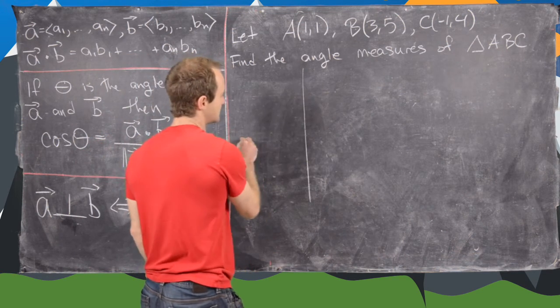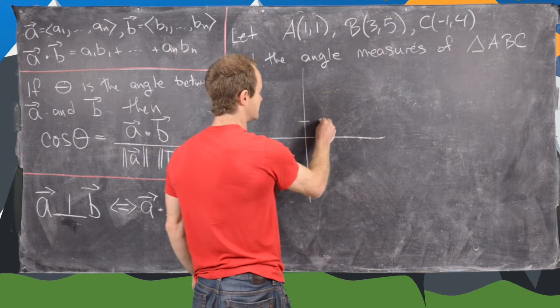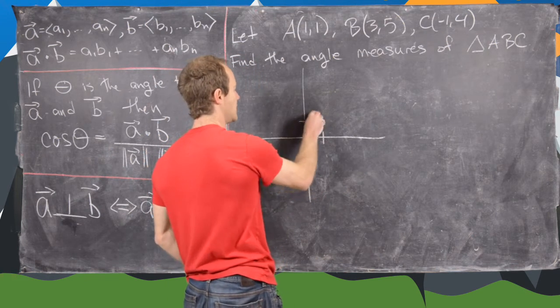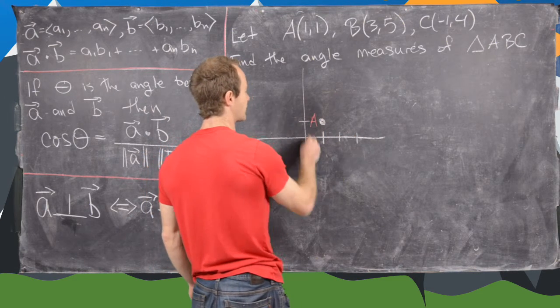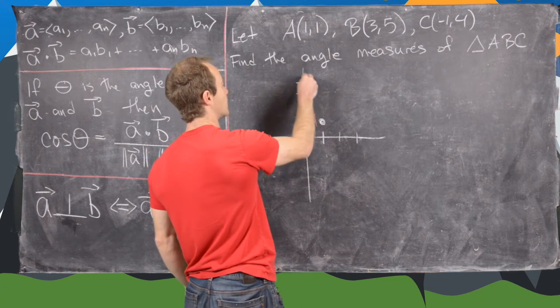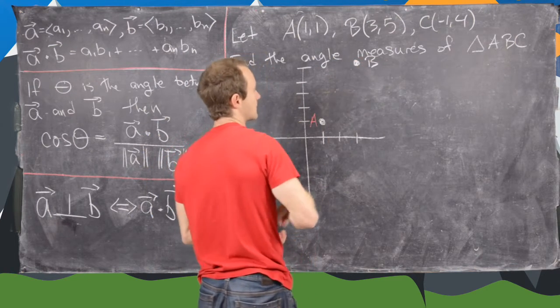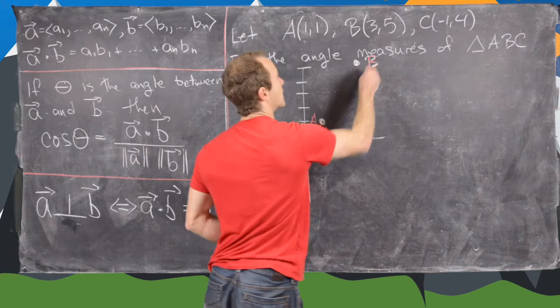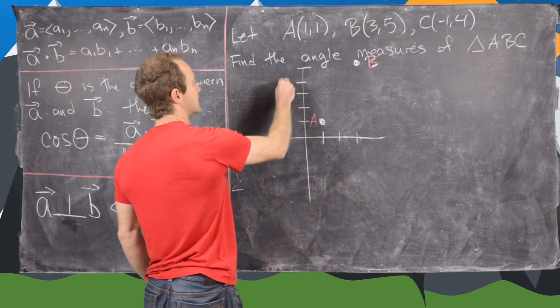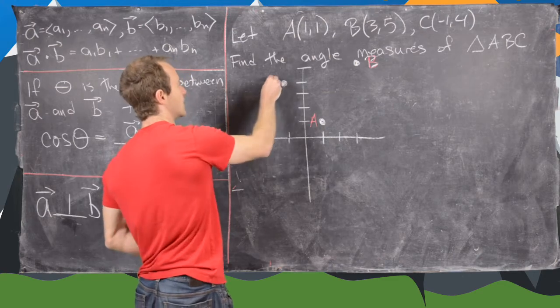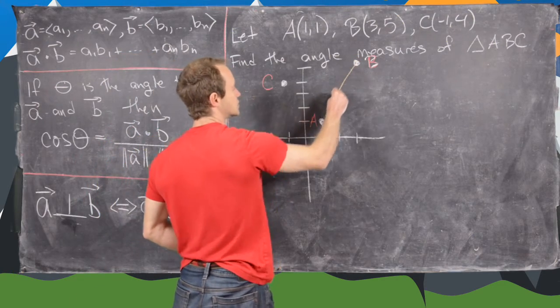So let's do a picture here. So notice A is at this point right here, that's 1, 1. So B is 3, 5, so 1, 2, 3, and then 2, 3, 4, 5. So there's B up here. And then C is negative 1, so that would be back here, and then 4. So that's up here. So there's C. So notice that nicely completes into a triangle like this.